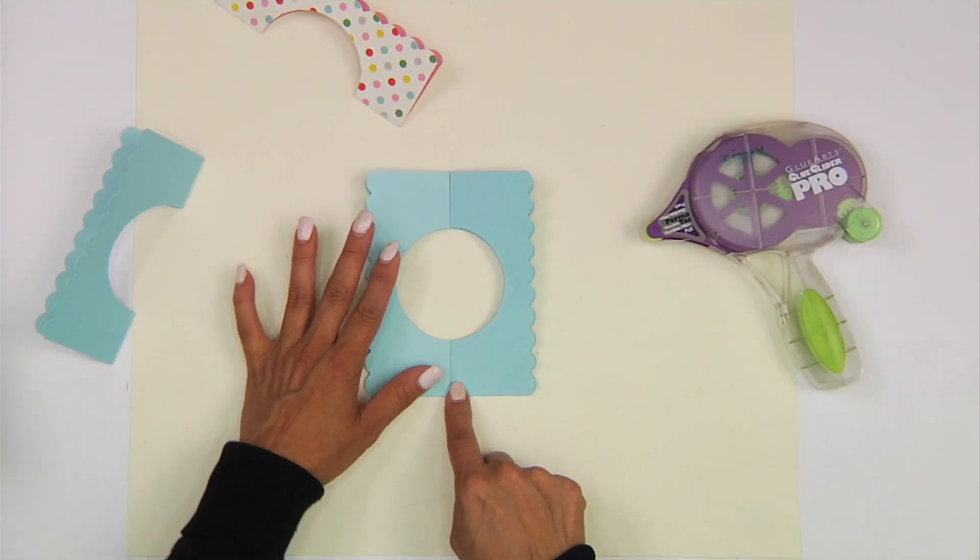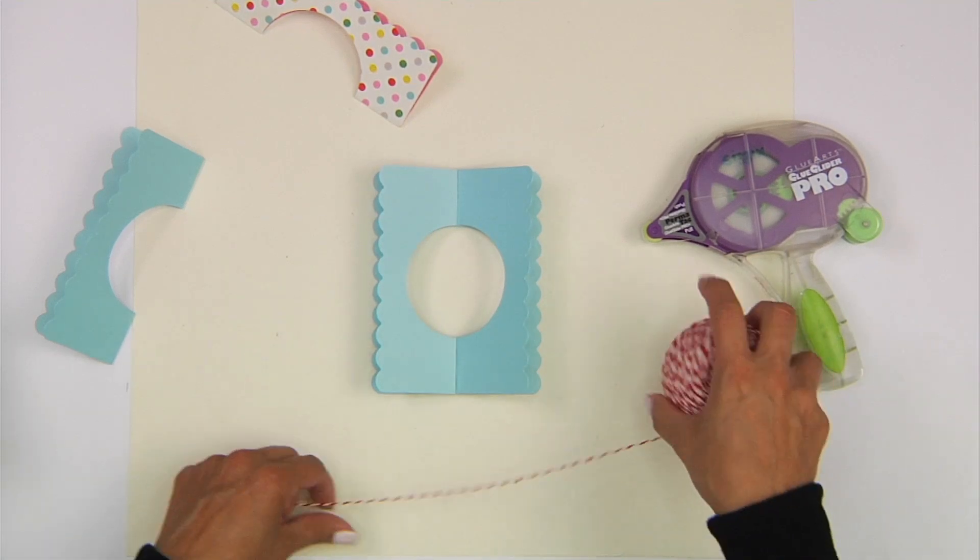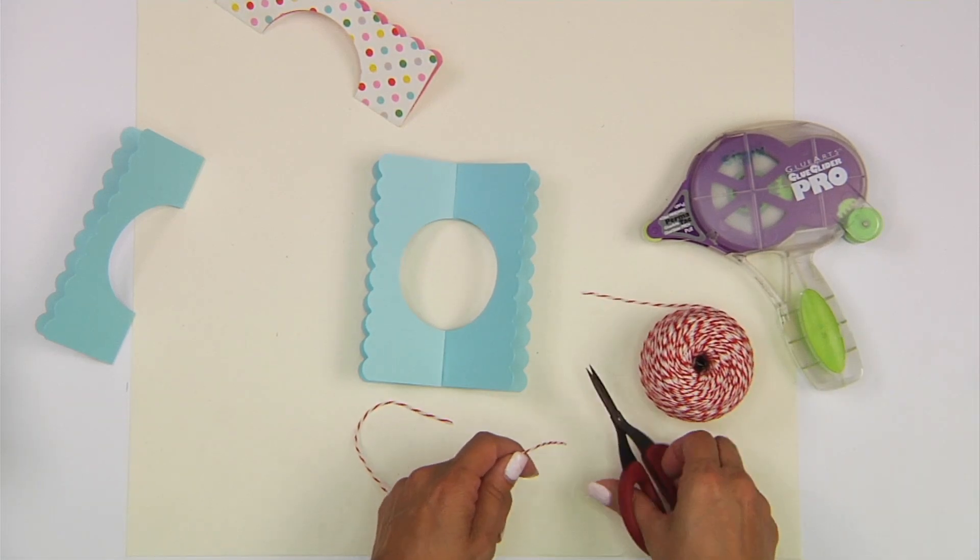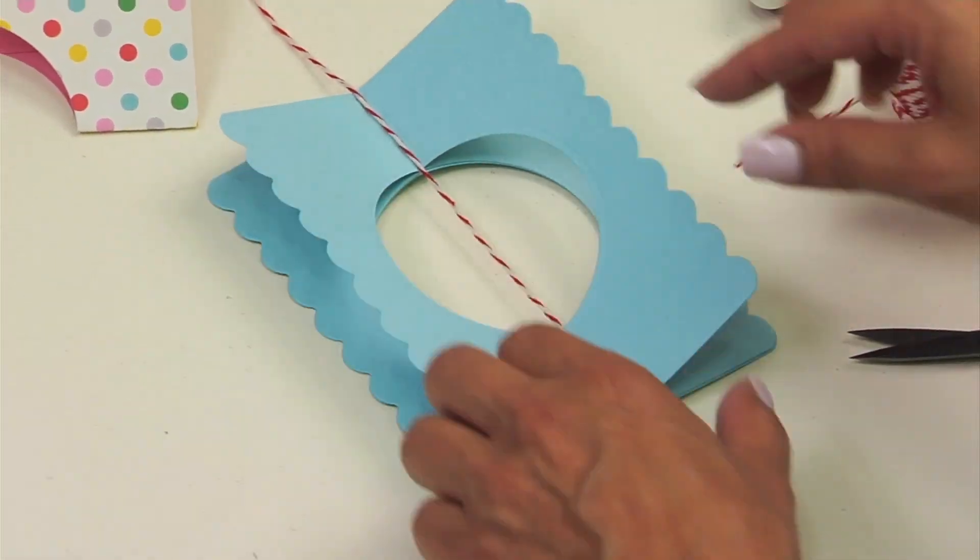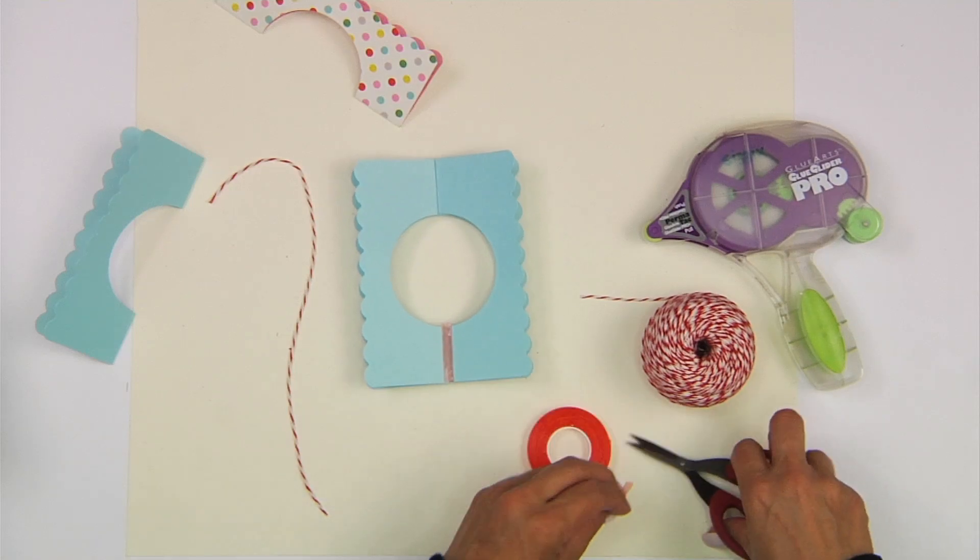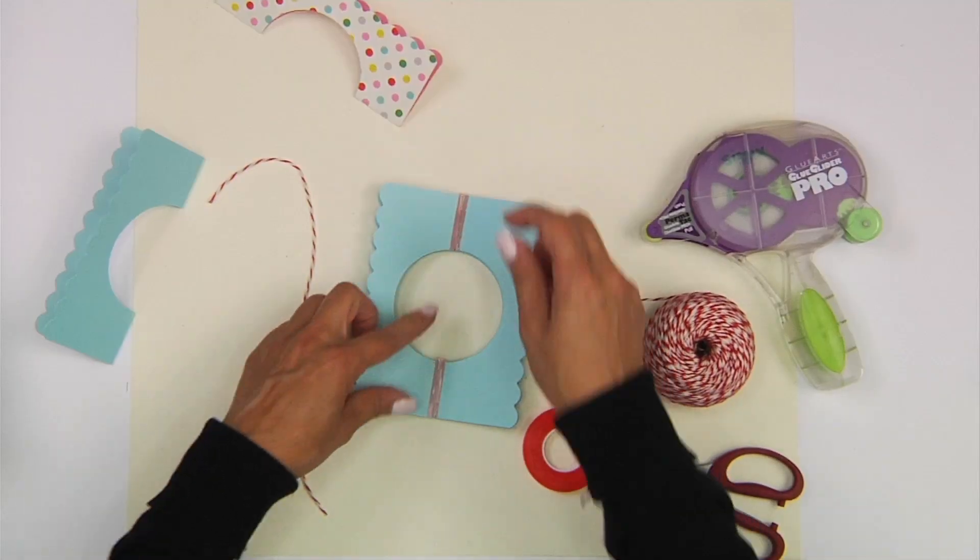Now, here you will need some twine to adhere to the center of this card base. And what I like to do is leave a little bit at the top as well as at the bottom. But first, I'm going to adhere some red tape down the center so my twine will adhere to the card.